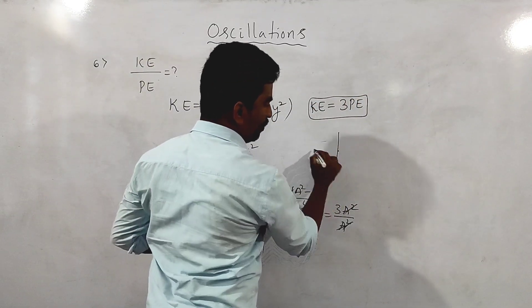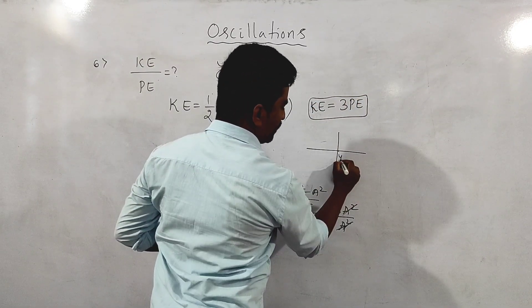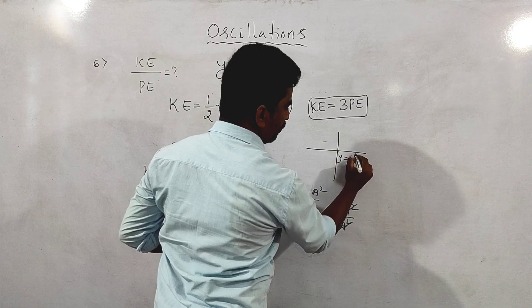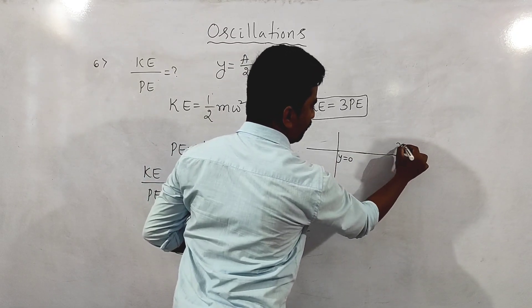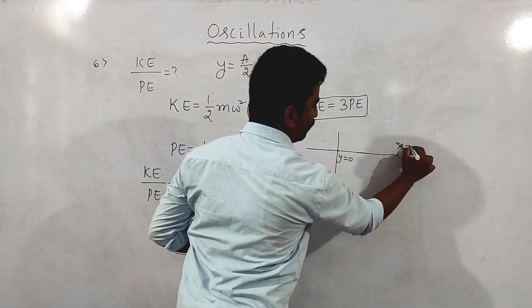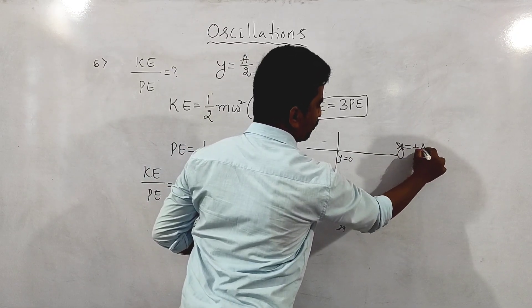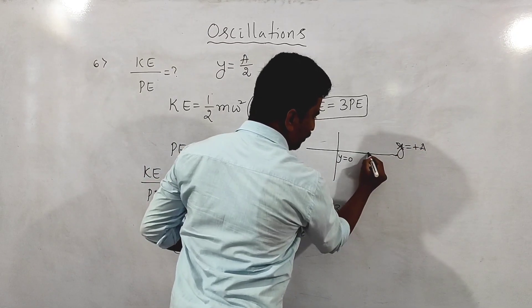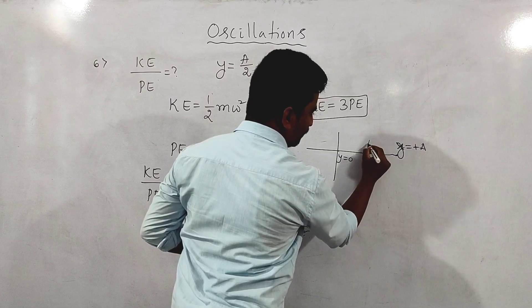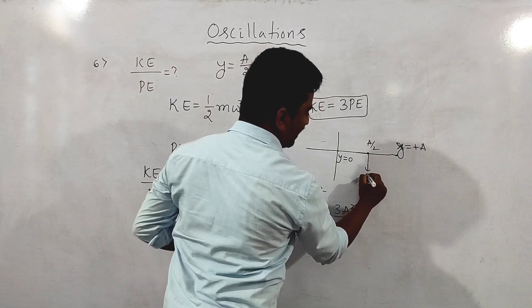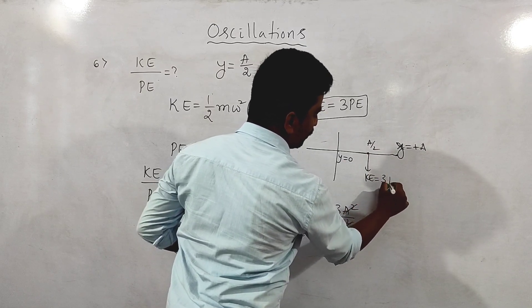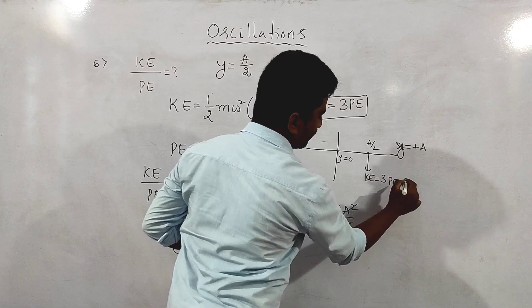The mean position is y equals 0, the extreme position is y equals plus A, and the middle distance is y equals A/2. At this distance, kinetic energy equals 3 times potential energy.